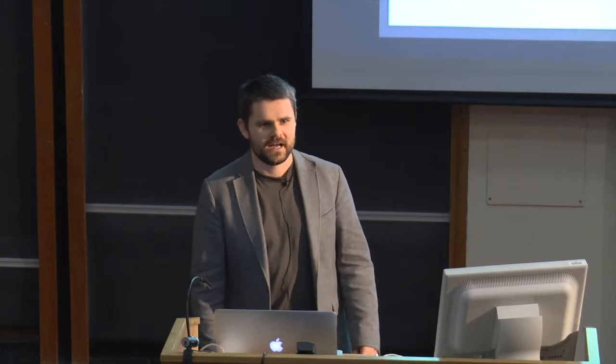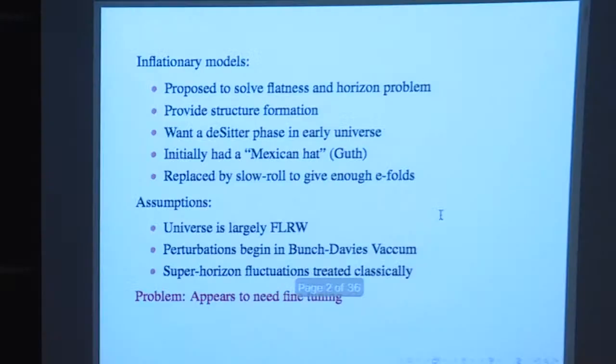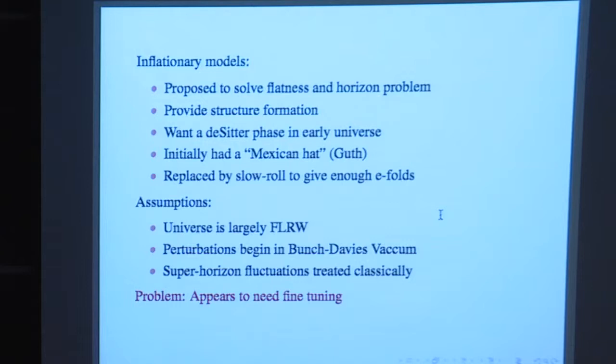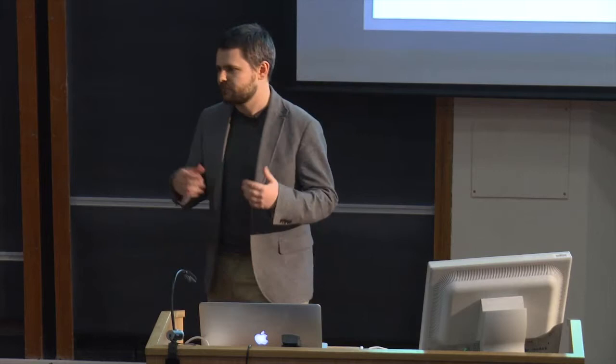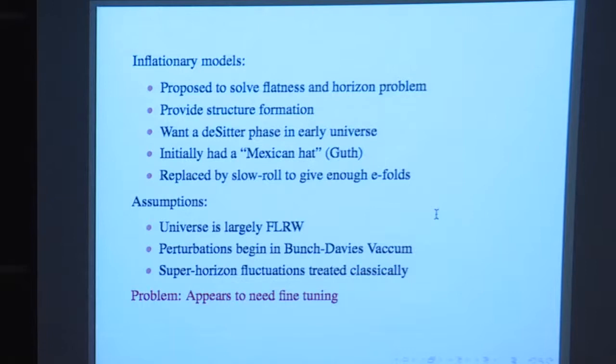We know a lot about inflationary models from Jerome's introduction. These were originally proposed to solve problems of flatness and the horizon problem — to address fine-tuning issues such as why the universe appears thermalized in regions that should not have been in causal contact. As a consequence, these models also provided a very nice explanation for structure formation, which is one of the reasons we started to believe in them — they gave answers to questions we didn't initially ask.